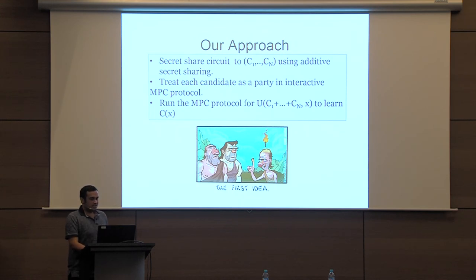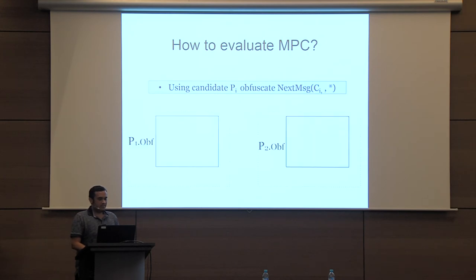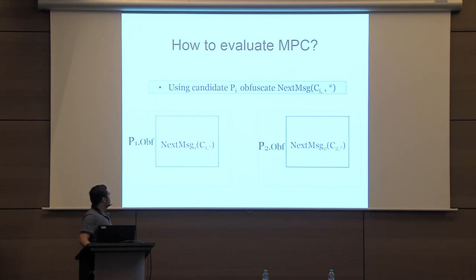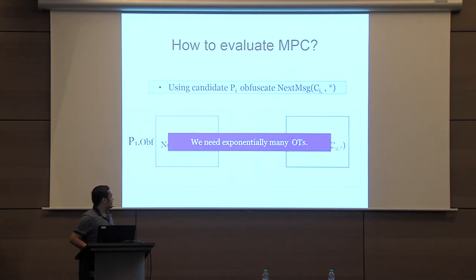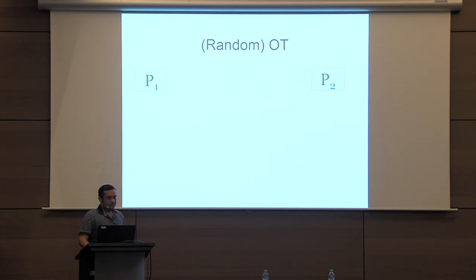To evaluate this MPC for two candidates, we have each candidate obfuscate its next message function. P1 obfuscates the next message function with C1 hardwired, and P2 with C2 hardwired. However, running this MPC requires OTs for every input X, which would need exponentially many OTs. There are several alternatives: use an OT protocol (but stronger assumptions), preprocess random OTs (but exponential preprocessing), or use PRF keys to generate OTs on the fly — which is the direction we follow.